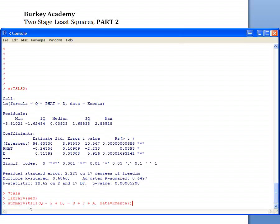The command is TSLS instead of the normal in R LM for linear model. The first part of the command is what equation do you really want to estimate, and this is the demand equation quantity explained by price and income. D is disposable income, and then a comma.